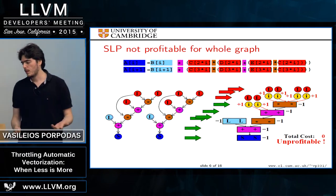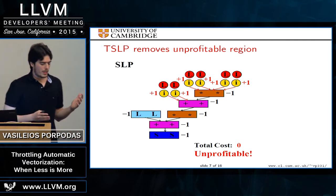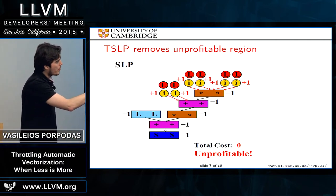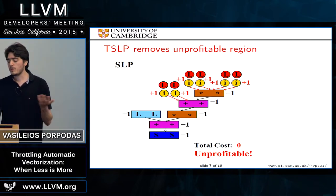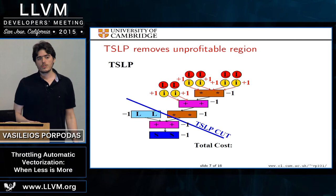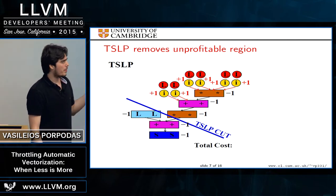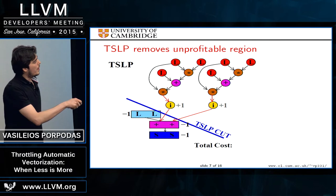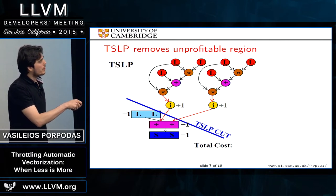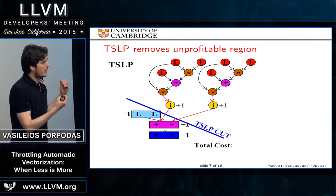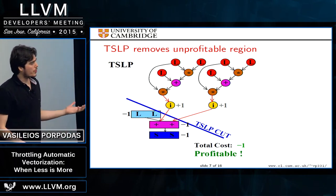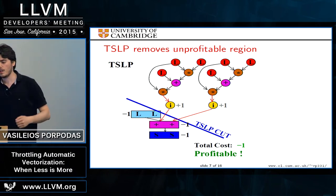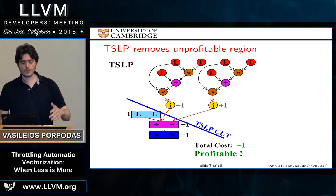This is exactly what TSLP aims to improve. All the overheads are associated with a particular branch of the code. By introducing a cut into the graph — where everything above the cut gets scalarized and everything below gets vectorized — and stopping vectorization earlier, we eliminate those overhead costs. The total cost becomes minus one, meaning one instruction is saved compared to scalar, and the code gets vectorized — unlike the previous approach which did not vectorize.